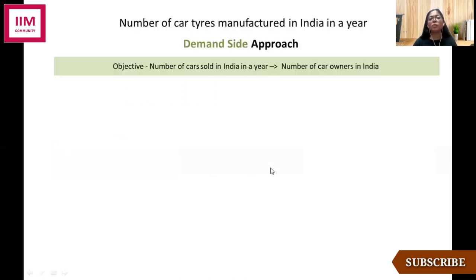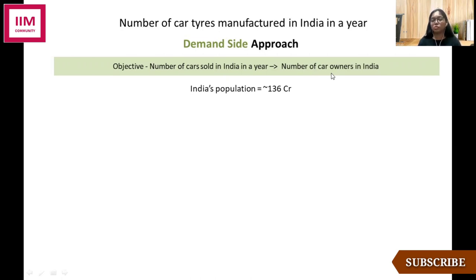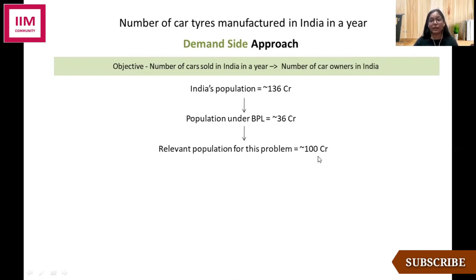In the demand side approach, the objective is to calculate the number of cars sold in India in a year. I'll focus first on the number of car owners in India. There's certainly a section of society that doesn't have access to a car, so I'll deduct that population from the total. The population below the poverty line (BPL) I assume to be 36 crore — the rationale being that subtracting from 136 crore gives a clean 100 crore, which is easy to work with. A more precise figure would be around 30%, giving roughly 95-96 crore, which would also be a good approach.